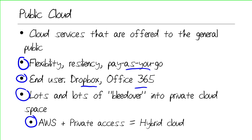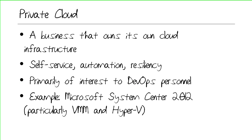The confusing thing about the public cloud is that we see lots of bleed-over into the private cloud space. For instance, Amazon Web Services used privately is equal to what's called the hybrid cloud. A private cloud is defined as an infrastructure where a business owns its own cloud services. Some hallmarks that define a private cloud include: can you do self-service? Can your employees dynamically provision virtual machines with just a couple of mouse clicks in a web browser? Do you have automation in place so that if your virtual Exchange server fails, you can spin up a replica instance in mere seconds?